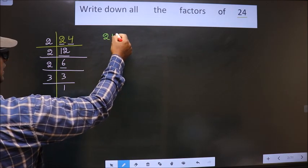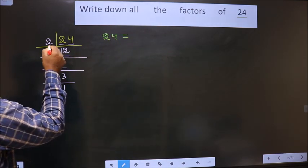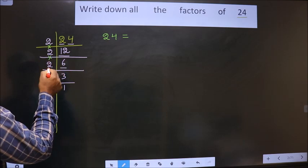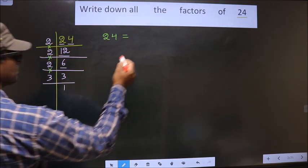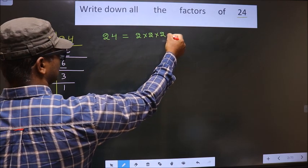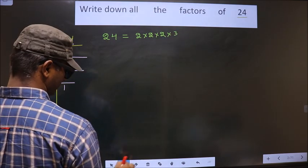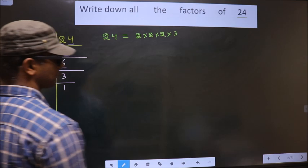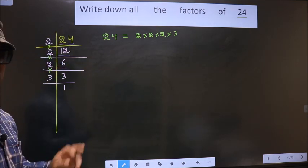So now 24 is nothing but the product of these numbers. That is 2×2×2×3. Clear so far.